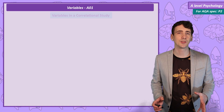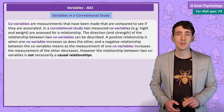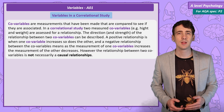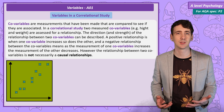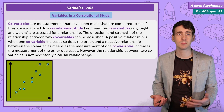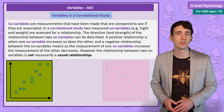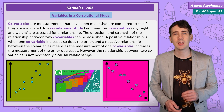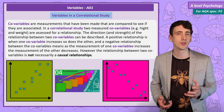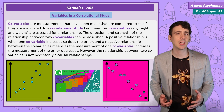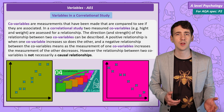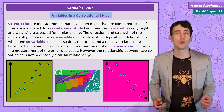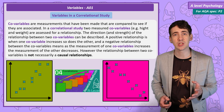In correlational studies, researchers measure co-variables. They take two measurements and compare them looking for relationships. These can be positive relationships — as one co-variable increases, so does the other — or negative, as one co-variable goes up, the other goes down. In correlational research we can say two co-variables are associated, but we can't say that a change in one causes a change in the other. It might be the other way around, or a third variable is responsible for the change in both.